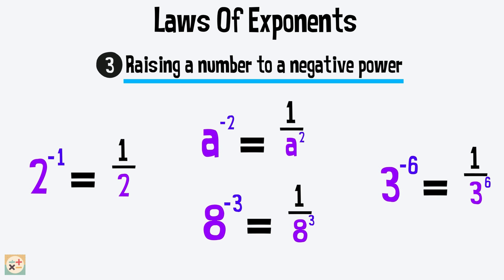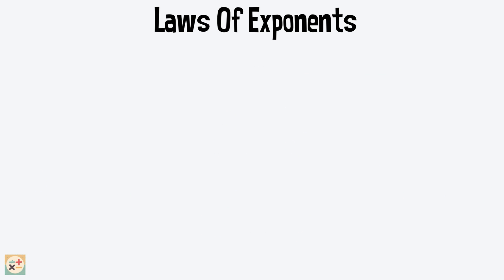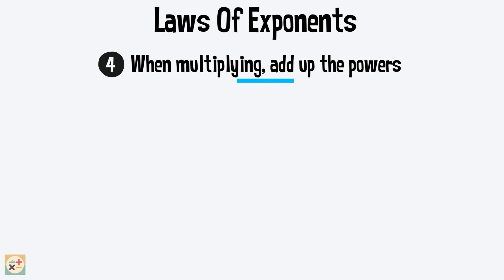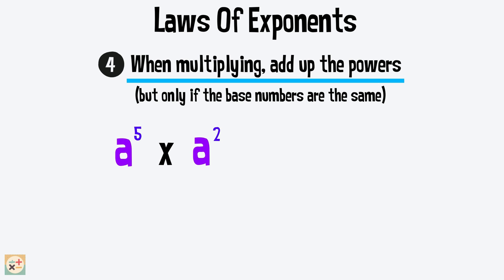The following two laws only work if the base numbers are the same. Rule number 4: When multiplying, add the powers. Let's have a look what this means. Here, the base number is the same, we have exponents of 5 and 2. So we keep the base number the same and just add the exponents together, giving us an exponent of 7.